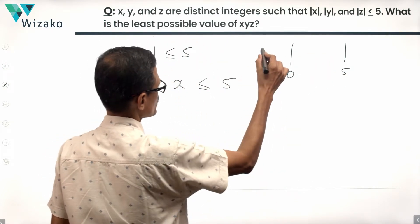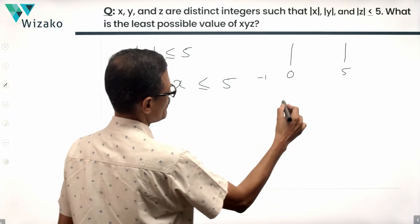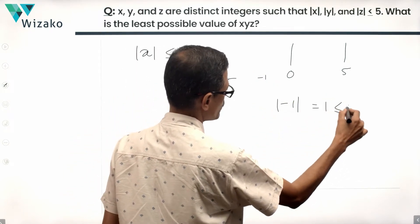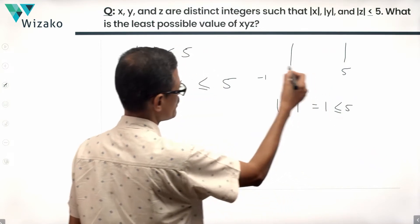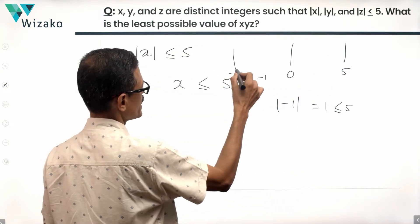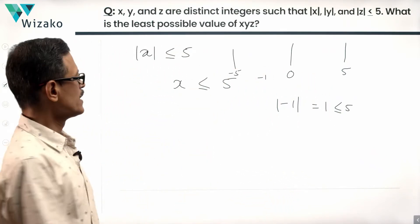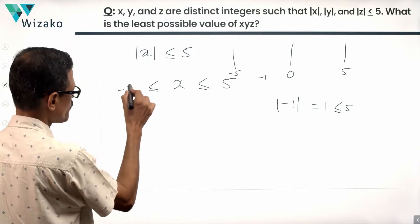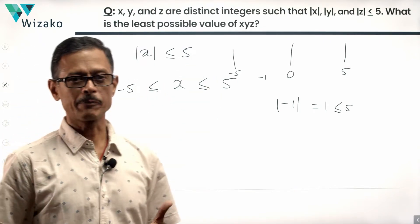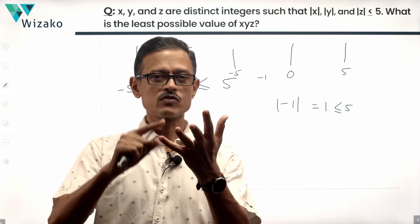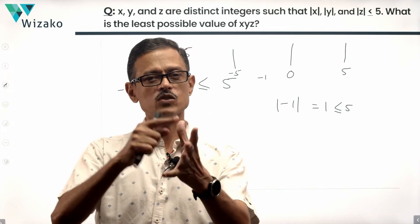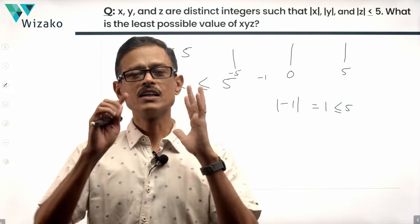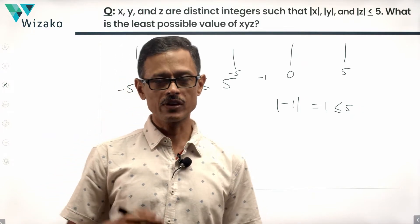Can x be minus 1? The modulus of minus 1 is equal to 1, which is less than or equal to 5. So on the negative side, x can go all the way to minus 5. The values x can take range from minus 5 to plus 5: minus 5, minus 4, minus 3, minus 2, minus 1, 0, 1, 2, 3, 4, 5 — so 11 values are possible for x.